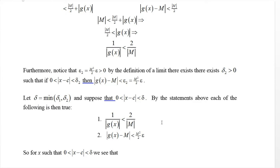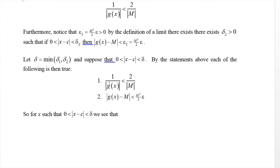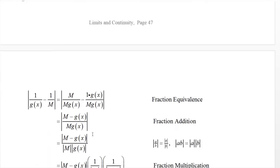So we have these two inequalities: 1/|g(x)| < 2/|m|, and |g(x) - m| < m²/(2ε). For any x sufficiently close to c — that is, |x - c| between 0 and delta — we can put these together.